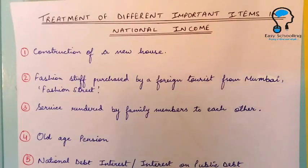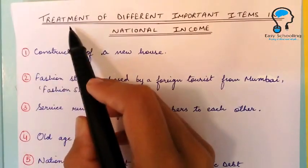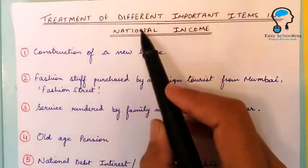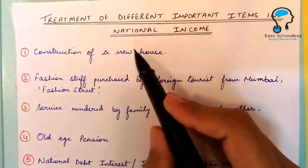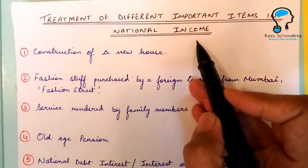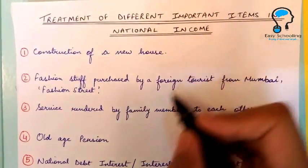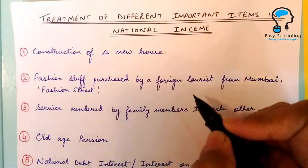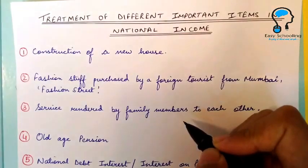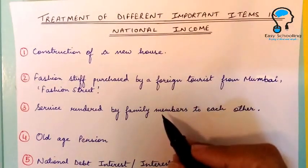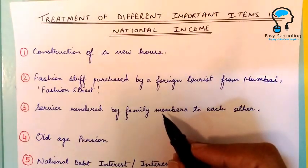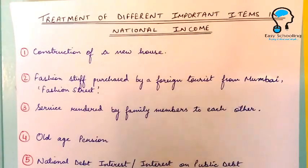In this video we are going to learn the treatment of different important items in national income. I am going to write yes or no to explain whether it will be included or excluded from the national income.